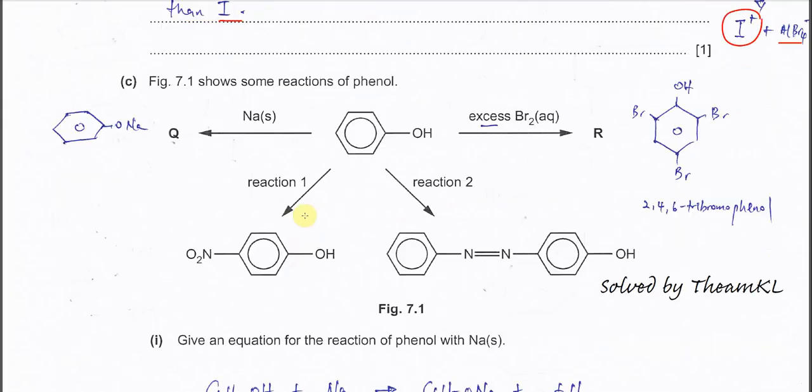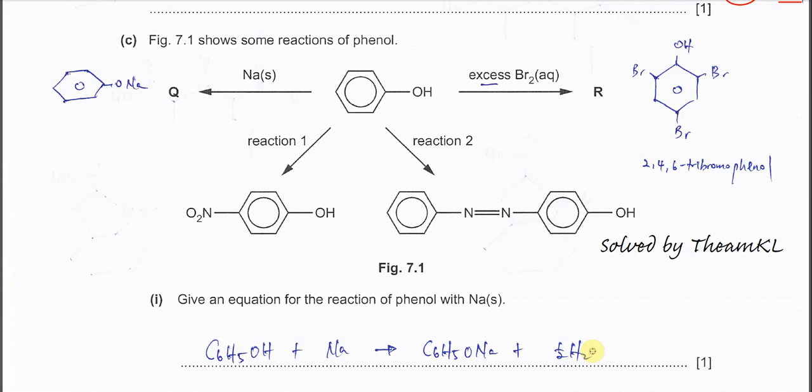Part c: Figure 7.1 shows some reactions of phenol. If we add sodium, because phenol can behave like an alcohol, when sodium reacts with phenol it will form the salt and hydrogen gas. This is sodium phenoxide, and of course half a mole of hydrogen gas will be released.